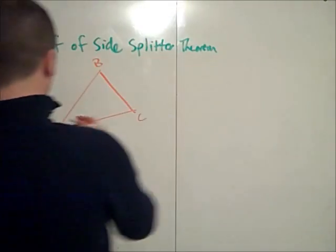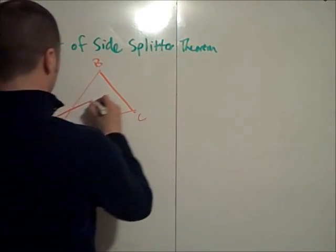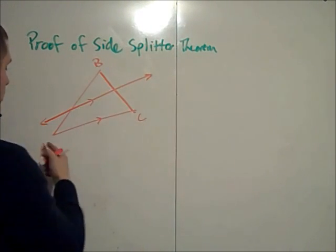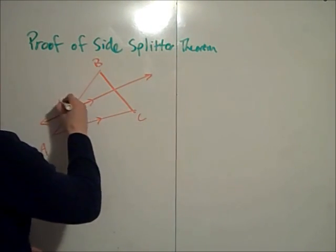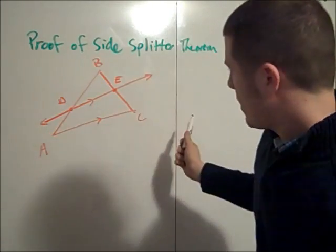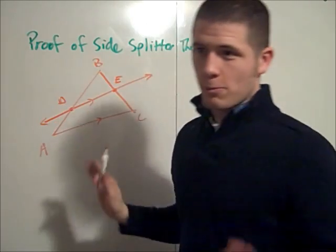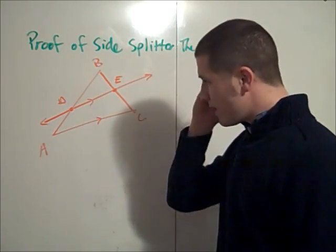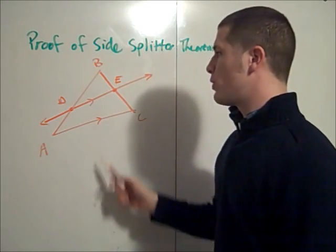for instance if I cut this triangle ABC with a line that is parallel to one of the sides, I call this line DE. That's not a very good parallel line but drawing not to scale. So DE parallel to AC then it cuts the sides proportionally.